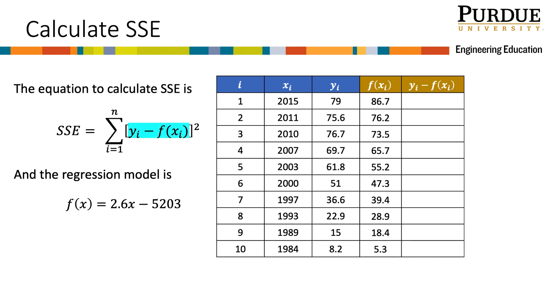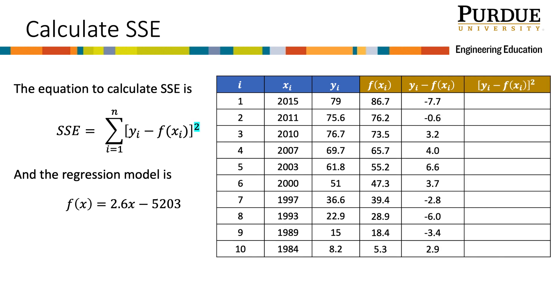Now let's do the subtraction part of the SSE equation. For the first line, we take 79 minus 86.7 to get negative 7.7. Again, repeat this for all x sub i's.